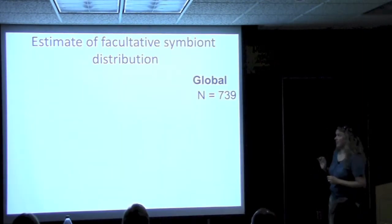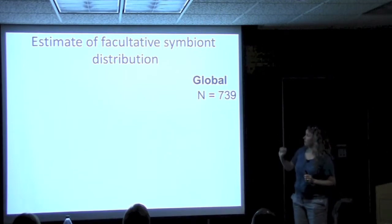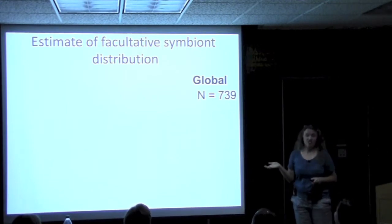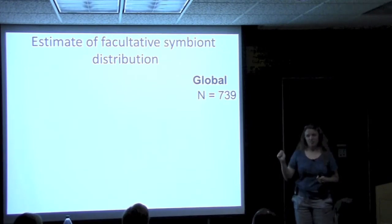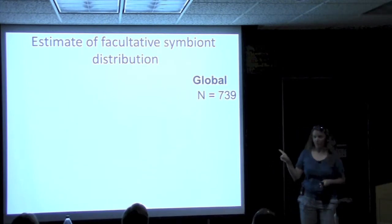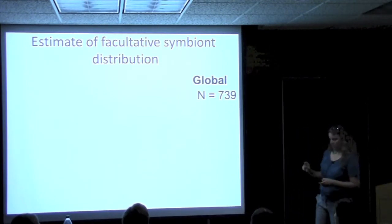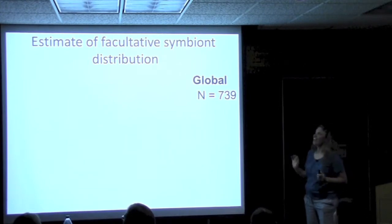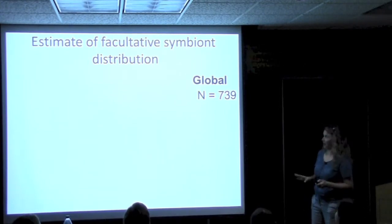The final dataset was 739 aphids. For anyone who does molecular work — she did at least 7 PCRs on each individual aphid, sometimes more, and we did not have a multi-channel pipettor. So it was a lot of work, and I want to give her full credit for that.